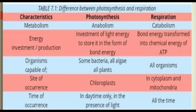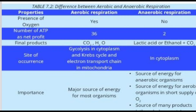Respiration is a process that occurs in all living organisms at all times. Now, comparing aerobic and anaerobic respiration: the first property is presence of oxygen. Aerobic respiration occurs in the presence of oxygen, while anaerobic respiration occurs in the absence of oxygen. The net profit for aerobic respiration is 36 ATP, and for anaerobic respiration it is 2 ATP. The final products of aerobic respiration are carbon dioxide and water, while for anaerobic respiration they are lactic acid, ethanol, and carbon dioxide.